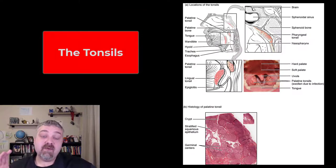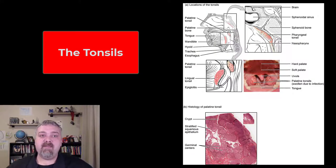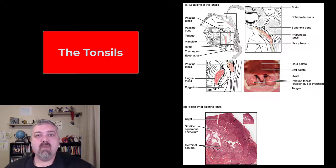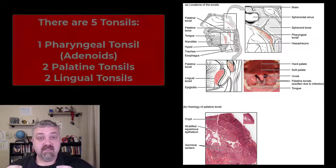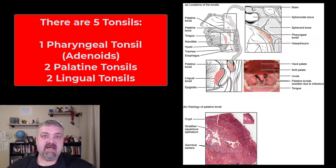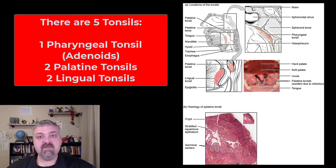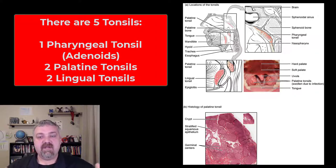Hey everybody, Dr. O here. In this video we're going to talk about the tonsils, an important weapon in the development of immunity against common oral pathogens. So first let's just talk about their structure. They're lymphoid tissues, which means they're going to have epithelial tissues but also germinal centers where your immune system cells live and constantly are on the lookout for invaders that they should develop an immunity against.